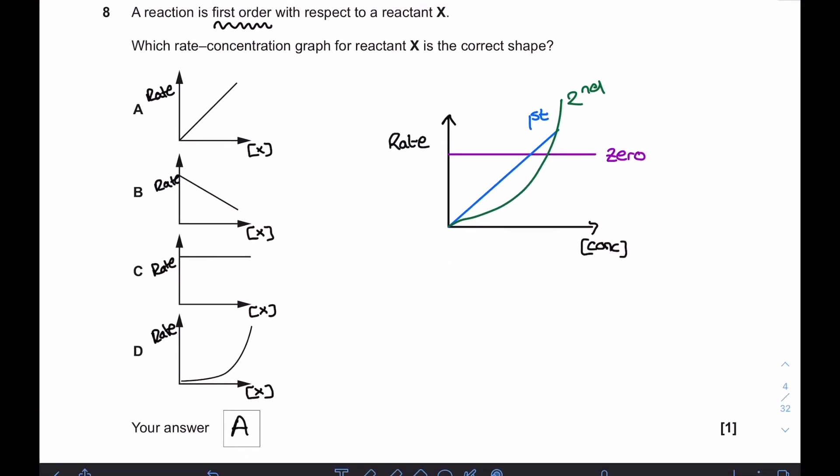Moving on to question 8. A reaction is first order with respect to reactant X. Which rate-concentration graph for reactant X is the correct shape? Here's your summary of the different shapes of these rate-concentration graphs you're expected to know. The one you need shows that directly proportional relationship between rate change and concentration change. It is A.